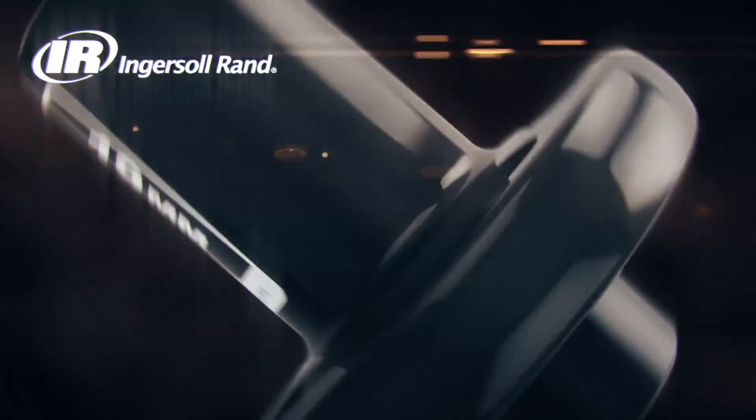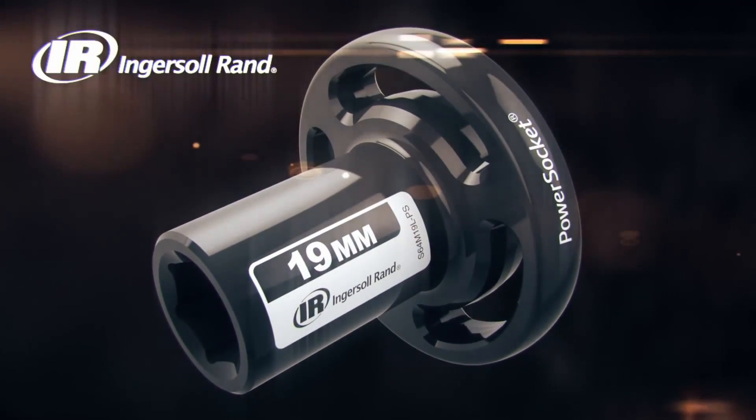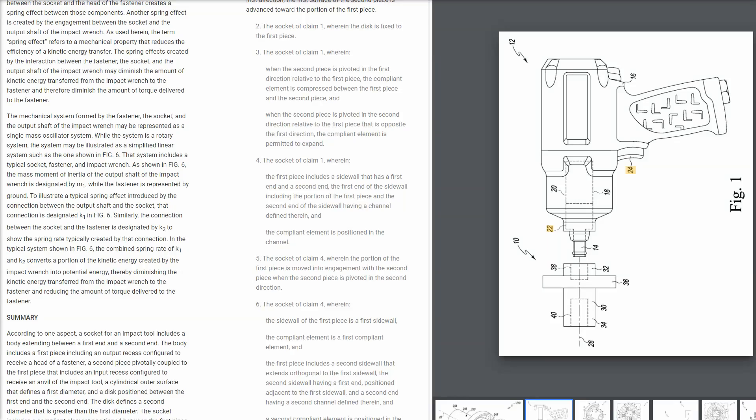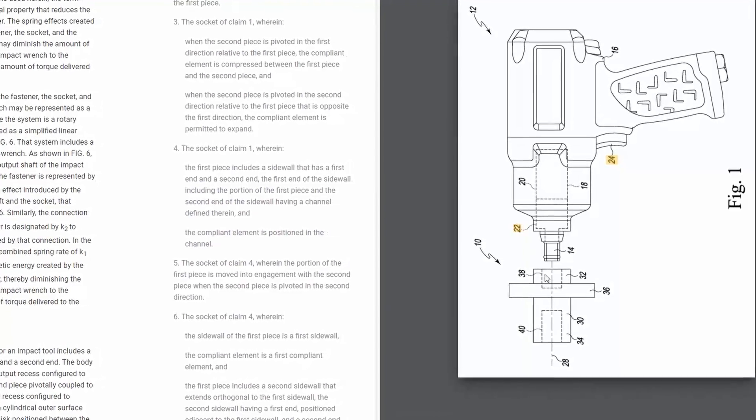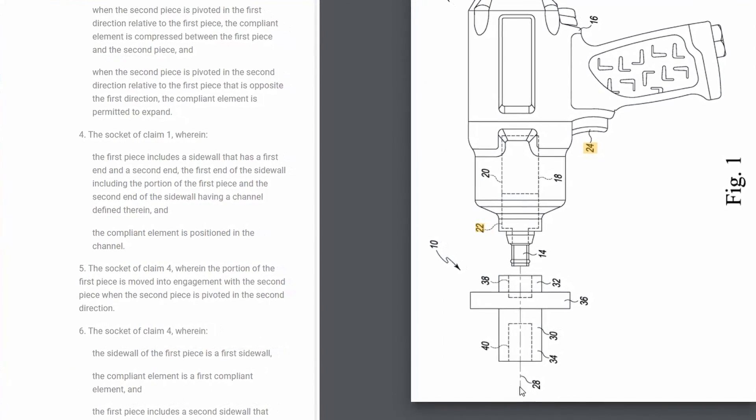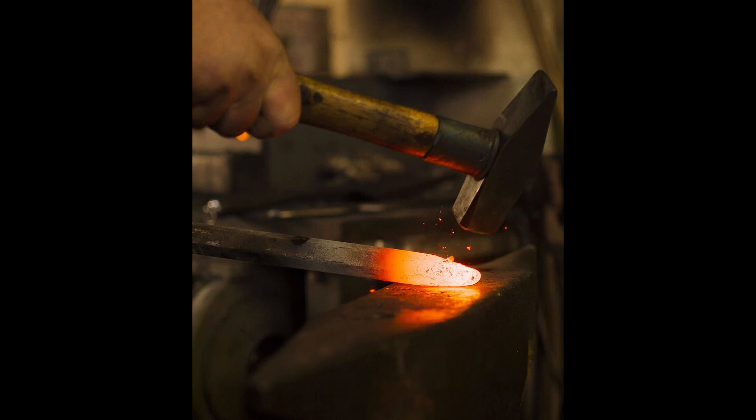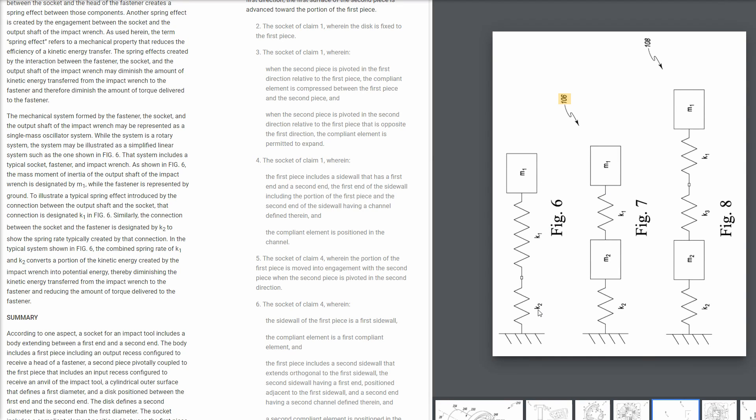Diving into the patent for the power socket, their engineers and patent attorneys spell it out completely where they feel this lost power goes. They contend, and this is their words, that the junction between the impact wrench's anvil and socket and further the socket and the fastener both experience a spring effect with each blow. Basically like your hammer rebounding off of an anvil, the amount your hammer is accelerated off the anvil in this case is the amount of input force wasted in that scenario. IR calls these values spring rates shown here as k1 and k2, and these quote convert a portion of the kinetic energy created by the impact wrench into potential energy, thereby diminishing the kinetic energy transferred from the impact wrench to the fastener and reducing the amount of torque delivered overall.